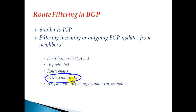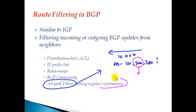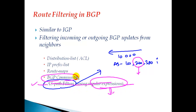BGP communities are an easy way to filter routes. You can also filter based on AS-path information — by default, any BGP update carries AS-path information like AS 100, 200, 300. Using AS-path filters with regular expressions, you can match specific AS-path information in BGP updates. AS-path filters and BGP communities are each covered in detail in separate sections. In the next videos, we'll get into BGP route filtering methods using distribution lists, prefix lists, and route map statements.